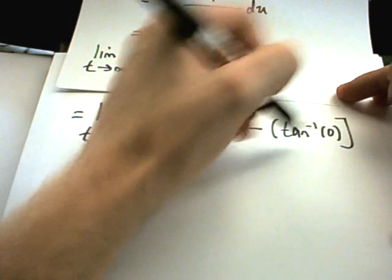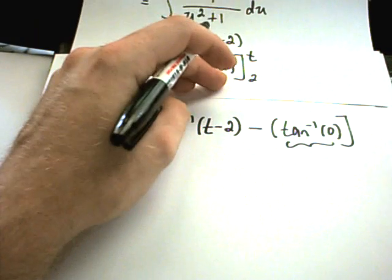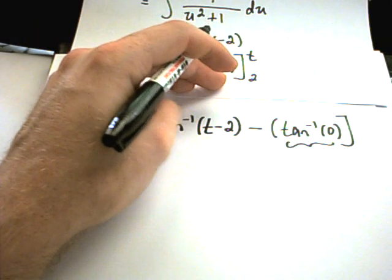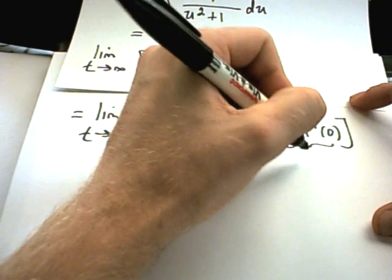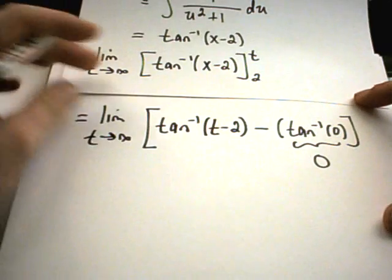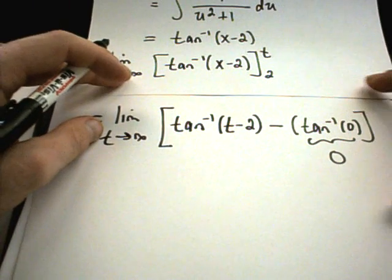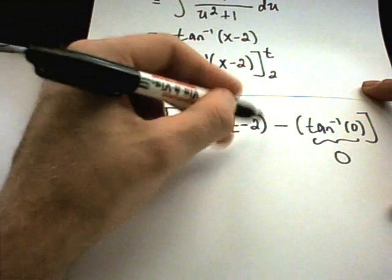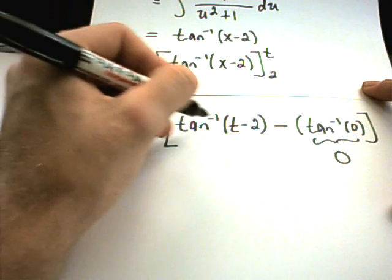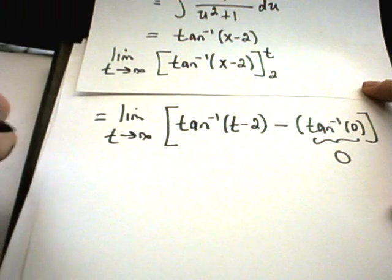And recall that arctangent of 0 is just a number. Do you remember what arctangent of 0 is? I believe it should just be 0, unless I've forgotten stuff as well. Definitely it is 0, because tangent of 0 is 0. So really I need to think about the limit of arctangent of t minus 2 as t goes to infinity.